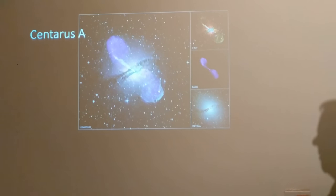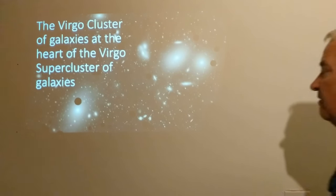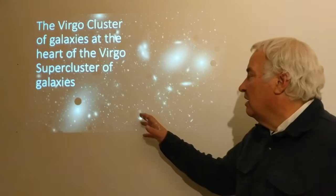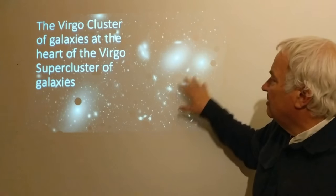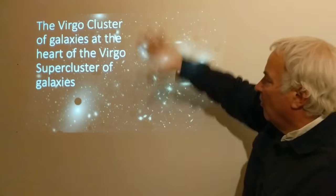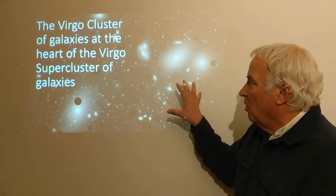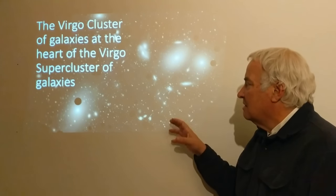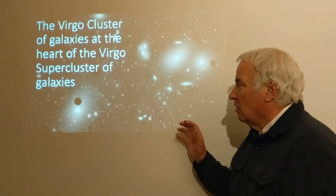This is not a very distant galaxy. Part of the local supercluster is the Virgo cluster of galaxies — this is the heart of the Virgo supercluster, about 53 to 55 million light years away. M87 sits right at the heart of this cluster; there are many other galaxies here stretching over a much larger space than the screen shows. This is at the center of a much larger system we call the Virgo supercluster of galaxies.